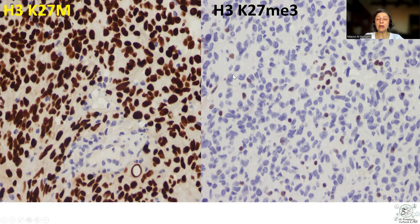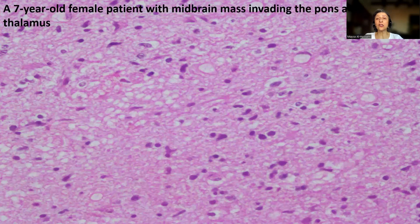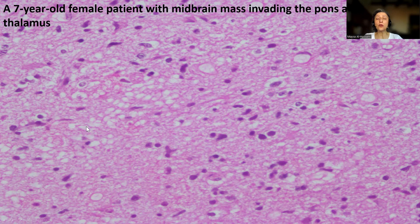Let's try another case — actually a more challenging one. This is a 7-year-old female patient who presented with a midline mass invading the pons and the thalamus. If we look at the tumor, it is really low-grade; there may be some atypical tumor cells, but we might not be quite sure. Would we assign a diagnosis of diffuse midline glioma with the associated dismal outcome?